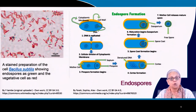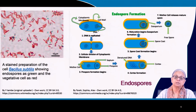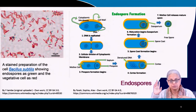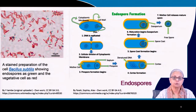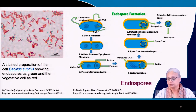This endospore is not going to reproduce. It will remain in dormant form until the environmental conditions become conducive to reproduction. Reproduction can take 30 years or millions of years. That is how the bacterial cell as a species is capable of surviving even millions of years.